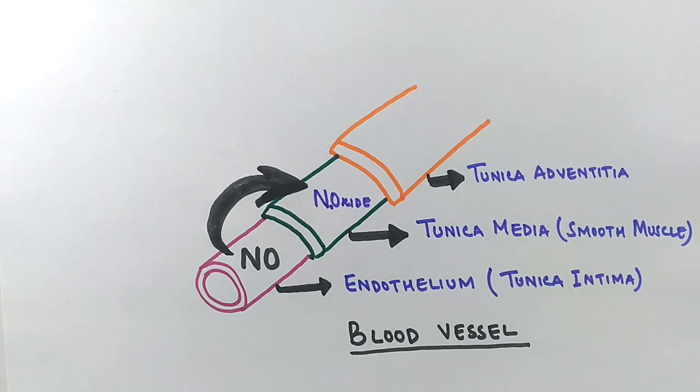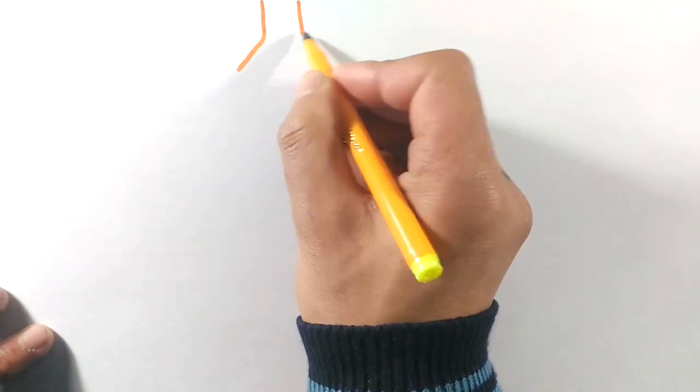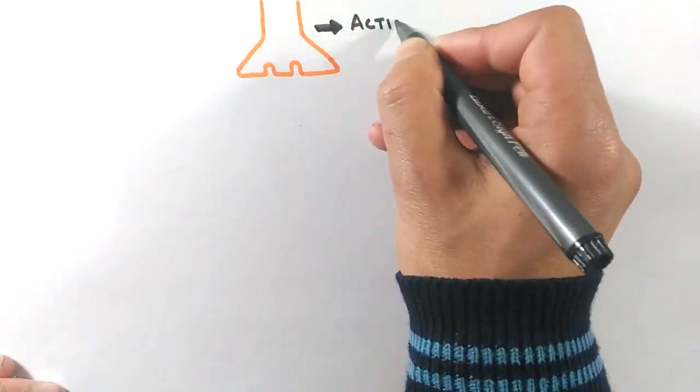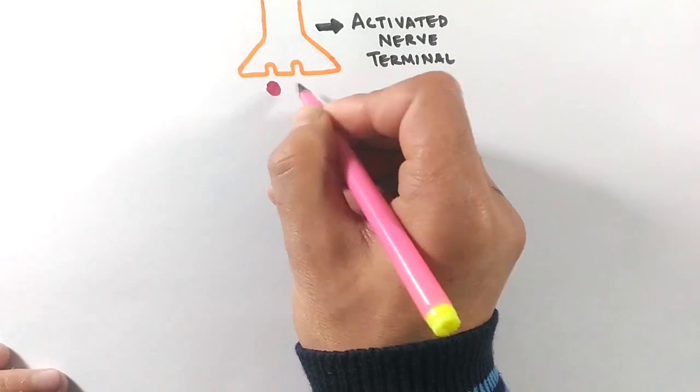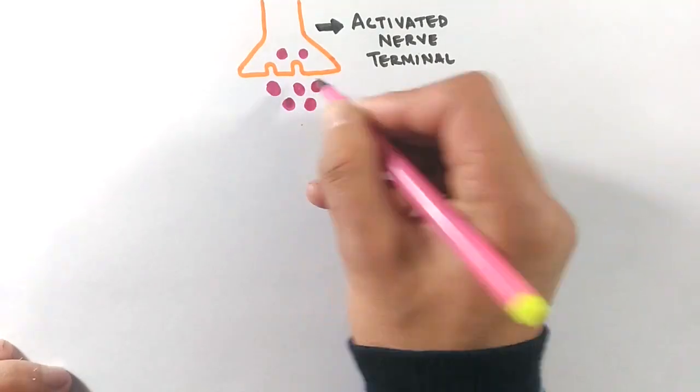Now let's see in detail how this mechanism occurs. In order to get the muscle relaxed, we have the activated nerve terminal first, which has received a stimulus to relax muscles.